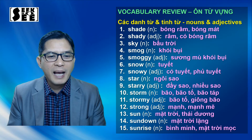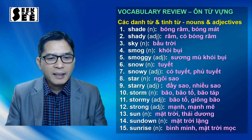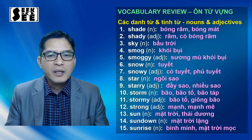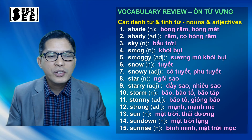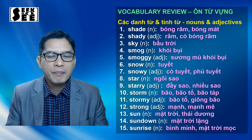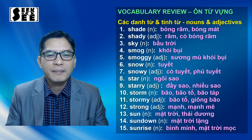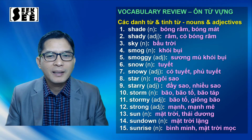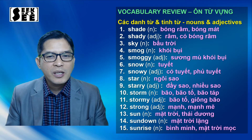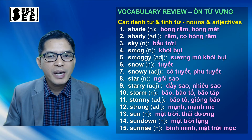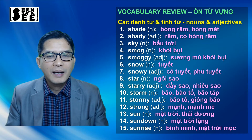Chúng ta sẽ đi qua từ đầu tiên. Số 1: shade, shade — âm đờ cuối cùng — shade, là bóng râm hay là bóng mát. Số 2 là tính từ shady, shady, là râm hay là có bóng râm.